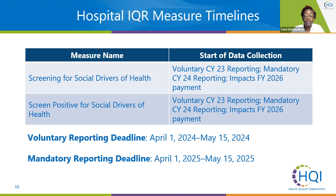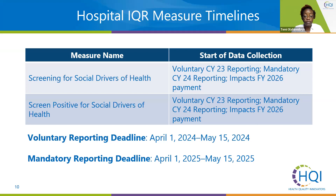Both the screening for social drivers and screen positive measures are voluntary to report in calendar year 2023, but will become mandatory in 2024. If you choose to report for 2023, the dates to include would be January 1st through December 31st, 2023. Because these measures are currently voluntary, they will not impact payment for fiscal year 2025, but will impact fiscal year 2026 payment once they become mandatory. Reporting will open on April 1st, 2024 and must be submitted by May 15th.